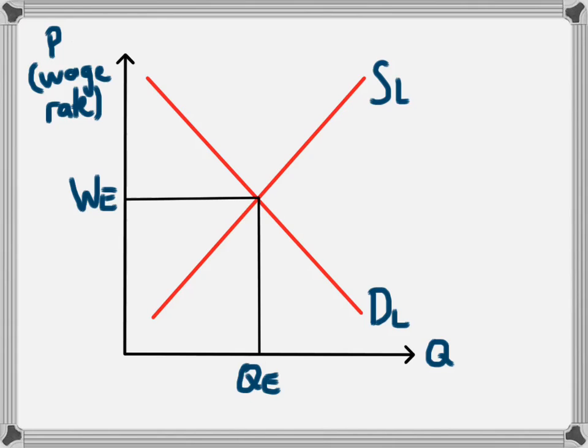The interaction of the supply and the demand for labour will lead to an equilibrium wage rate of WE, and the number of workers who will be employed at this wage rate will be QE.